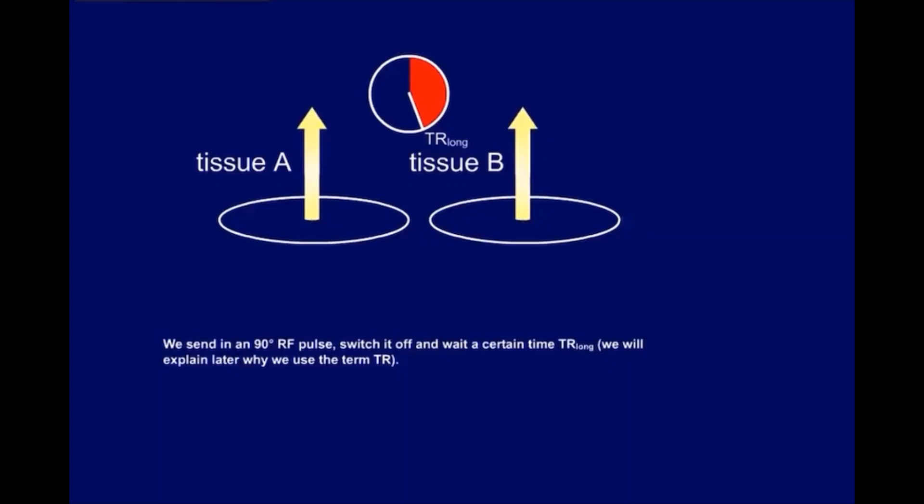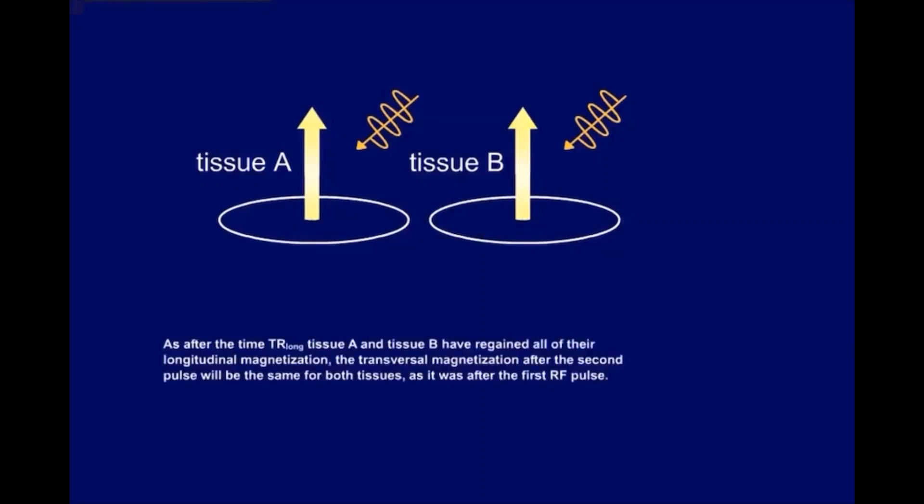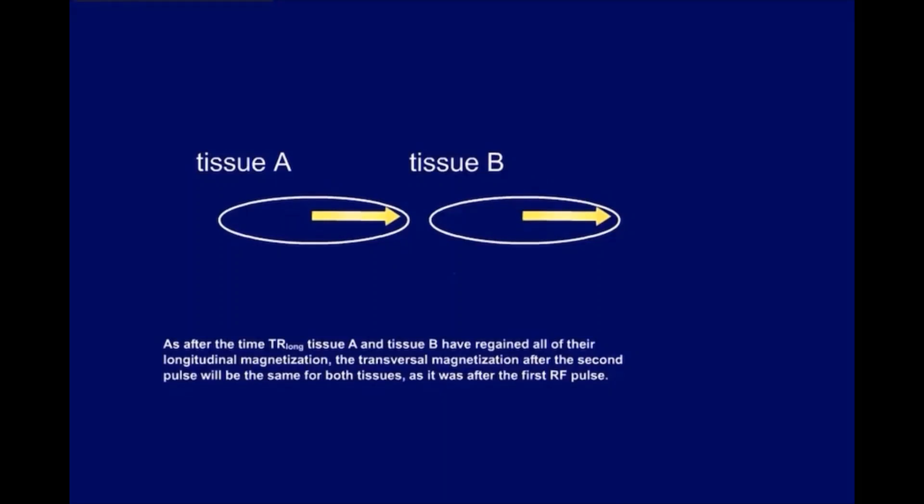We will explain later why we use the term TR. Then we send in a second 90 degree pulse. What will happen? As after the time TR long, tissue A and tissue B have regained all of their longitudinal magnetization, the transversal magnetization after the second pulse will be the same for both tissues, as it was after the first RF pulse.